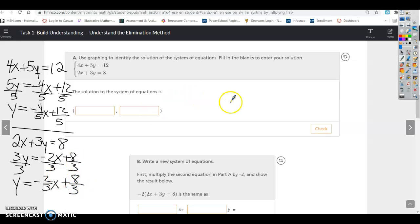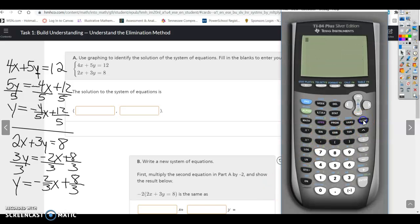So to solve by graphing, I can simply put these in my calculator and find the intersection point. So for y1, I'm going to put in my first equation, negative 4/5 x. So negative 4 divided by 5 is negative 4/5 x, and then plus 12/5, so plus 12 divided by 5. And then my second equation, I'm going to put in negative 2/3 x, negative 2 divided by 3 x plus 8 divided by 3. I'm going to hit graph.